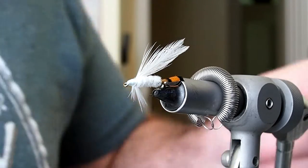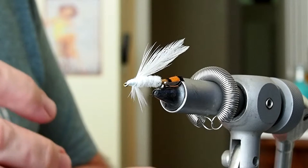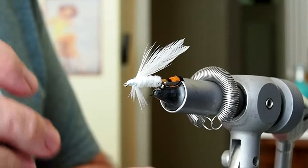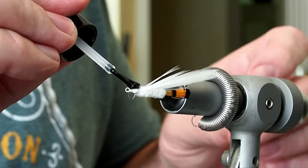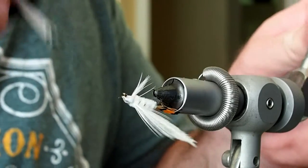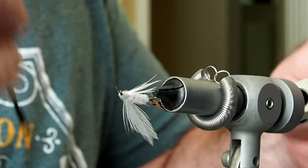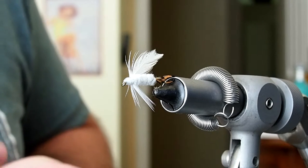Before we paint on some eyes I like to touch the head with some Sally Hansen's just to protect the thread wraps, and we'll let that dry.